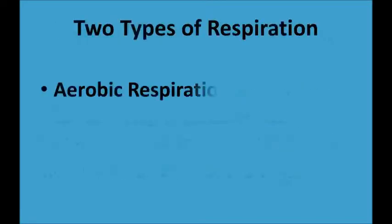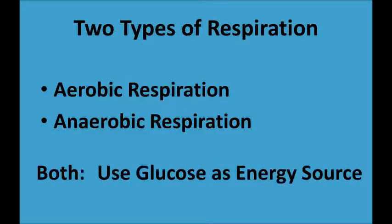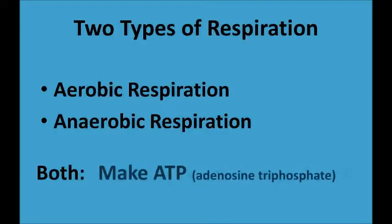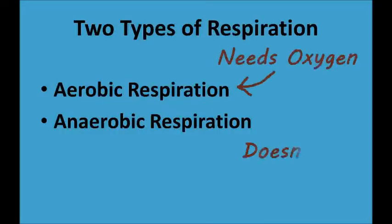There are two different types of cellular respiration, and we call these aerobic and anaerobic respiration. They both work by breaking apart the chemical bonds in glucose to release energy, and they both use the energy to make a substance called adenosine triphosphate, or ATP for short. The main difference between them is that aerobic respiration requires oxygen, and anaerobic respiration doesn't.